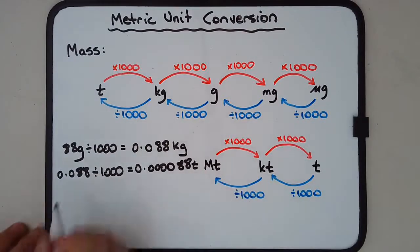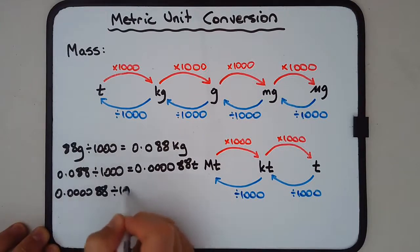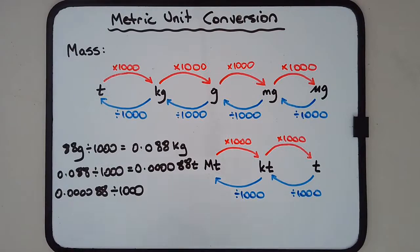All right, tons to kilotons. We've got four zeros: one, two, three, four, eight, eight. Divide that by a thousand. What is going to happen here?